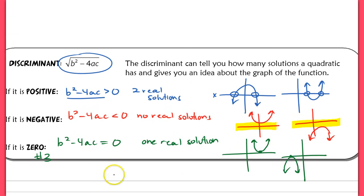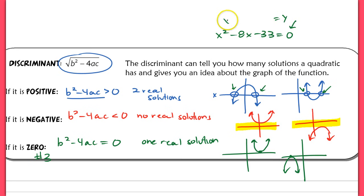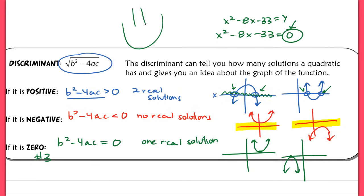This is a really important concept in terms of tying the algebraic approach to a graphical one. These are the zeros of your function, which is what you're finding when you solve a quadratic equation like that first one. You're finding essentially where y equals zero — for a function like y equals x squared minus 8x minus 33, we're setting it equal to zero, finding where it crosses the x-axis. That's what you're doing whenever you solve a quadratic equation. That's the end of the lesson.